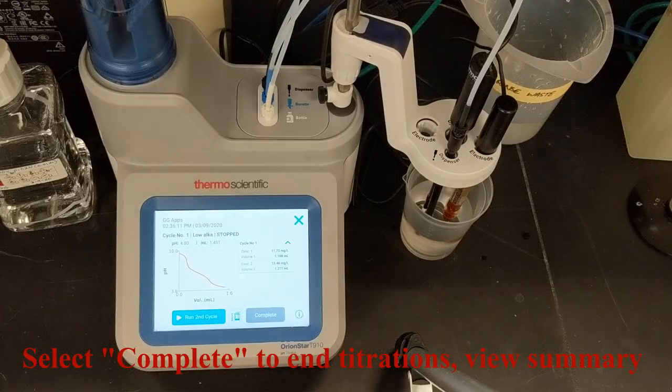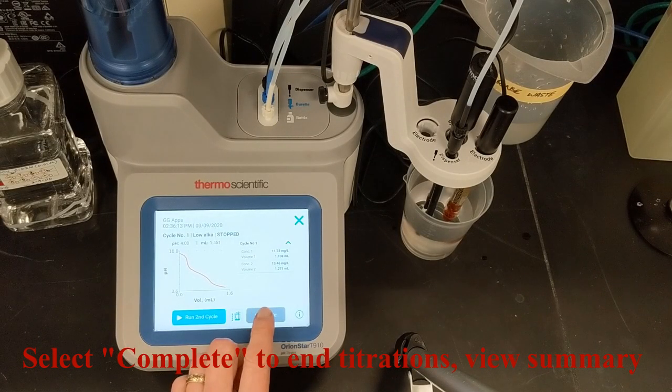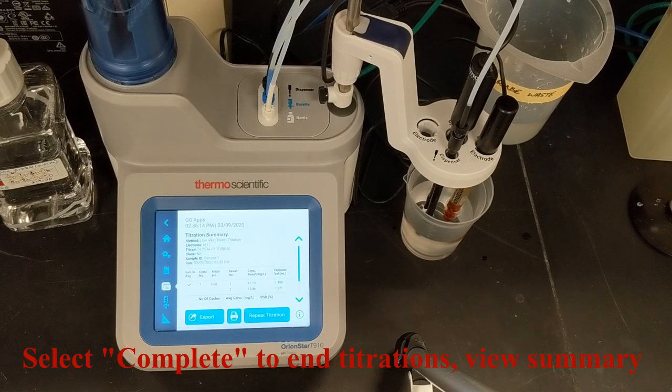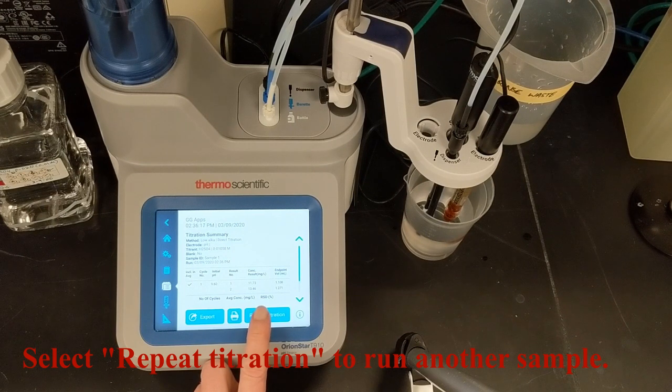I'm done with this sample, so I select complete, which shows me the summary screen. And I touch repeat titration to run another sample, bringing me back to the titration pre-check screen.